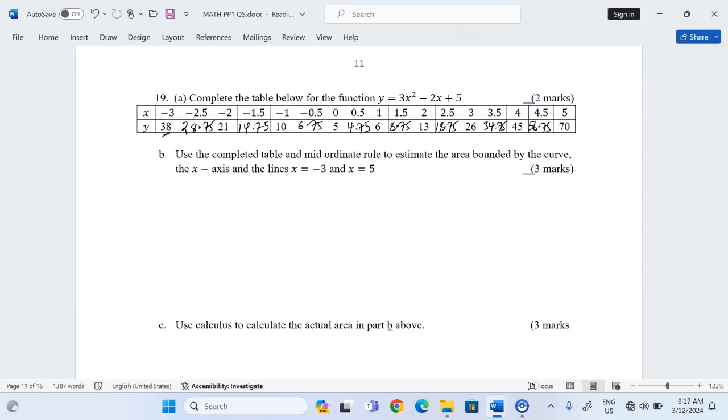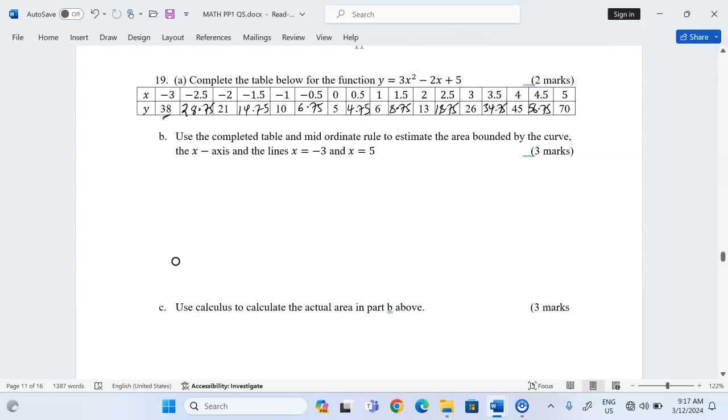Part B: use the completed table and mid-ordinate rule to estimate the area bounded by the curve. Here are the x-axis and the lines x equals negative 3 and x equals 5. Therefore, this curve, remember... Let me just sketch the curve.